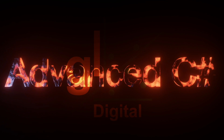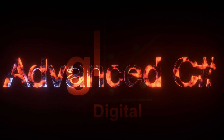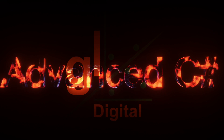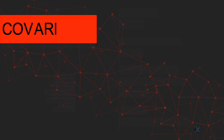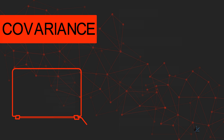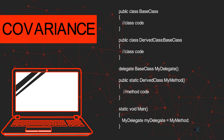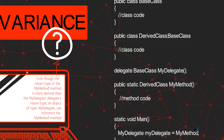In the first part of this tutorial on delegates, I mentioned that the return type and parameter types of the method referenced by a delegate object must match the return type and parameter types defined in the relevant delegate's definition, but I also mentioned that they don't have to match exactly.